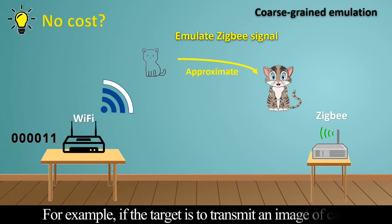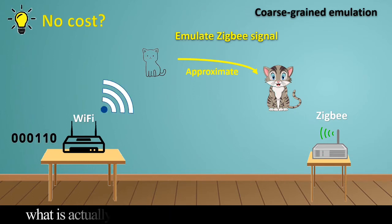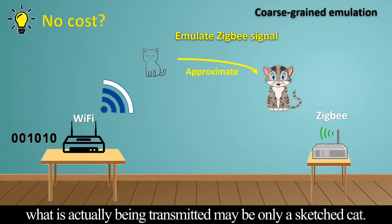For example, if the target is to transmit an image of a cat, what is actually being transmitted may be only a sketched cat.